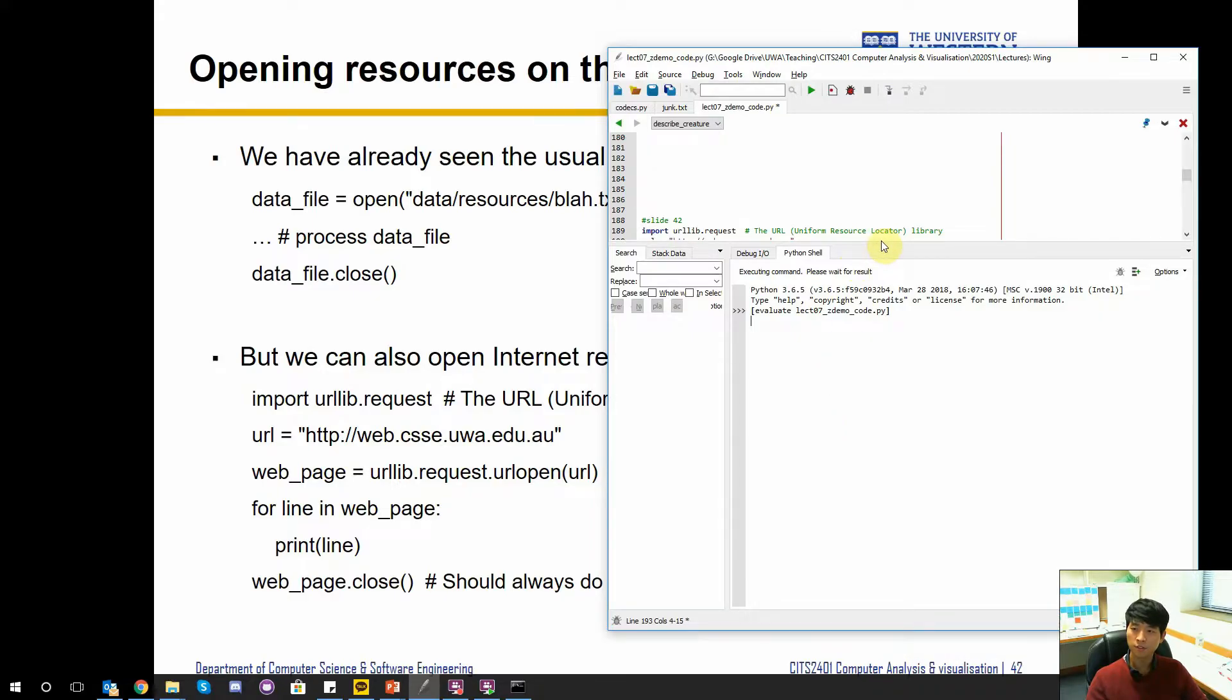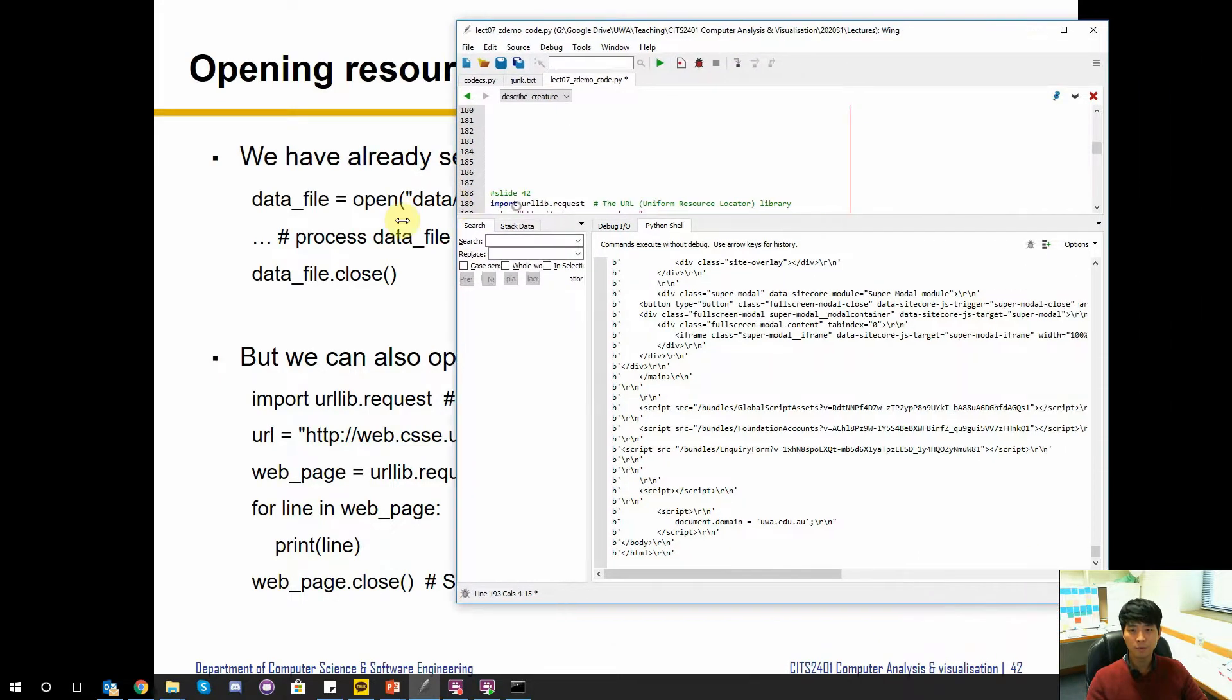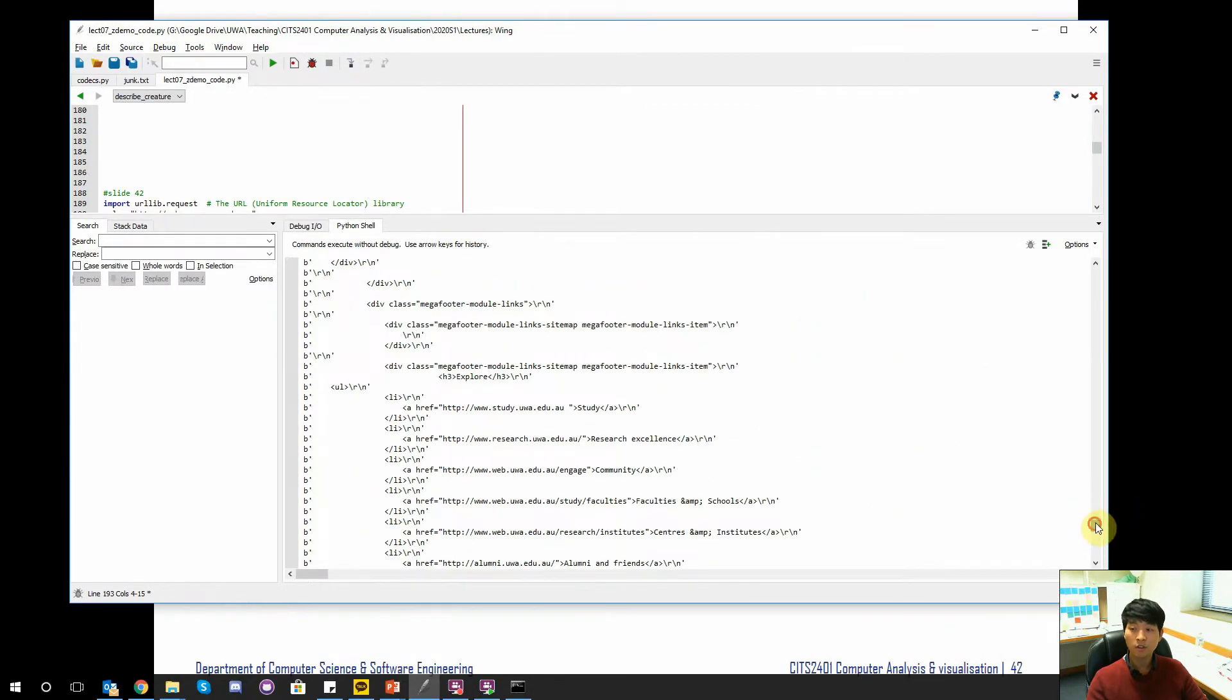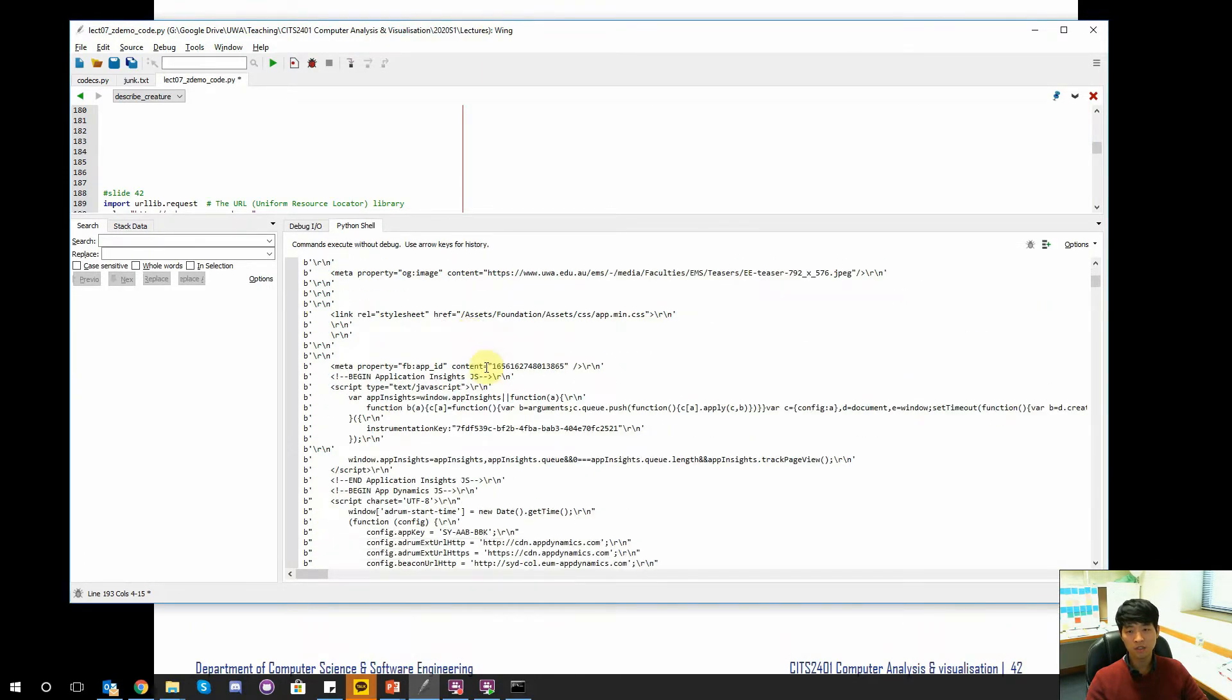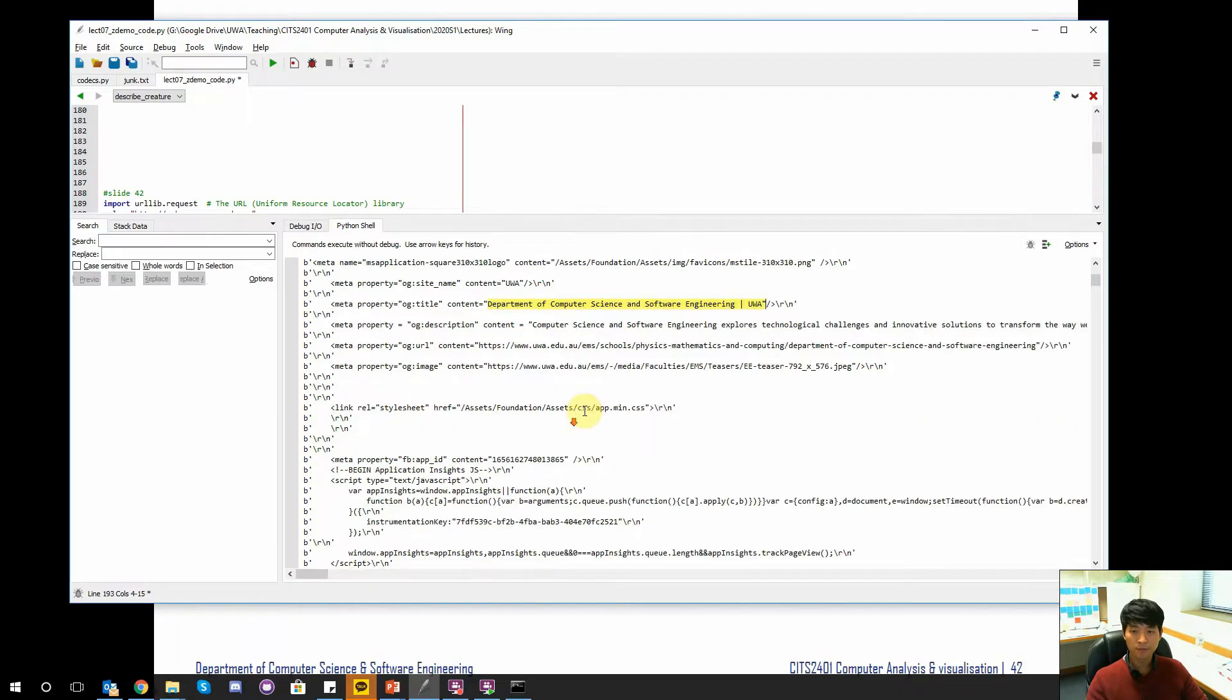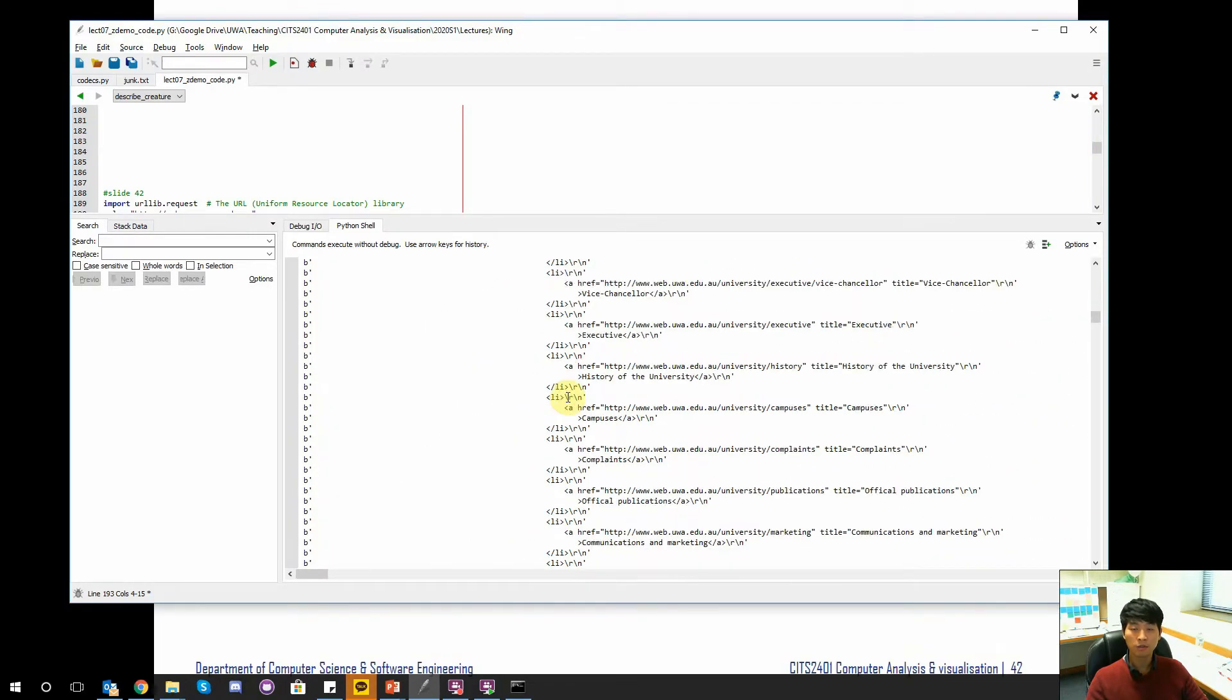If it ever fetches... oh there we go. So basically what you see here is the HTML content of our departmental home page. If you have experience with HTML, you will quickly notice that we start with the document type, this is HTML, and then we have a bunch of data and all the content. Here you can probably see things like Department of Computer Science and Engineering UWA and all that stuff.